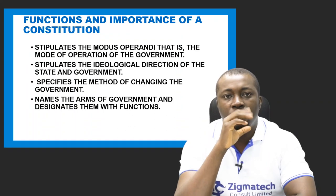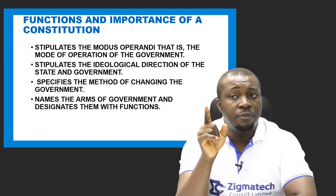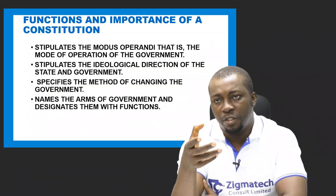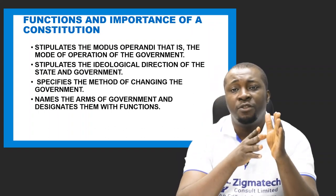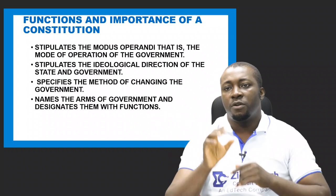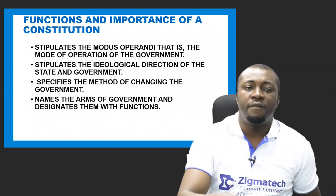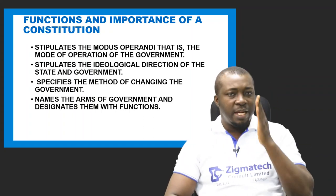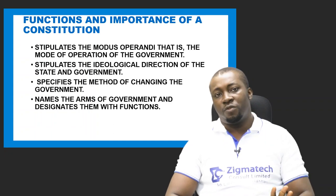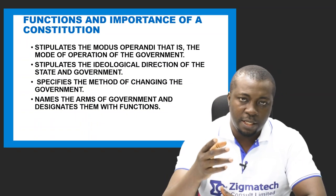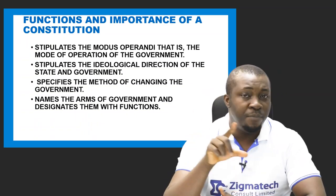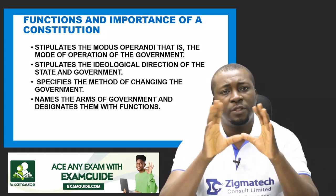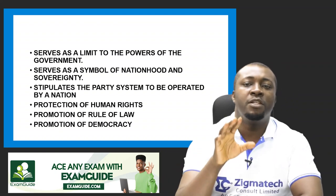Now let's look at the functions or importance of a constitution — why every nation must have one. First, it stipulates the modus operandi of the government, that is, how the government operates. It also stipulates the ideological direction of the state and government. The constitution stipulates how the government can be changed — the process and methods including the electoral system. It also names the arms of government and designates them with appropriate functions, making it clear when abuse of power or encroachment on another organ's power occurs.